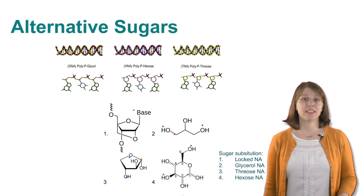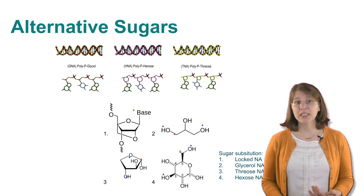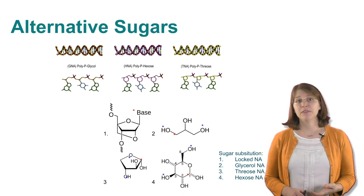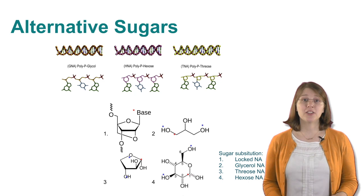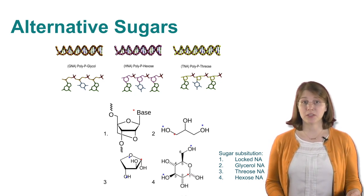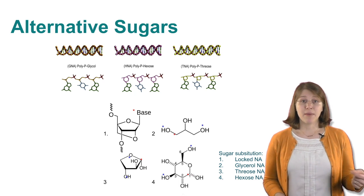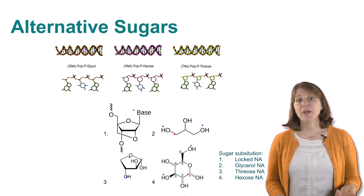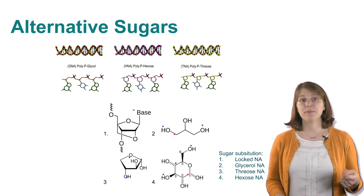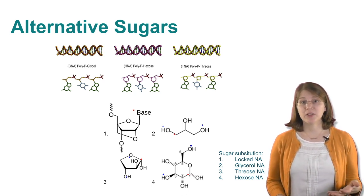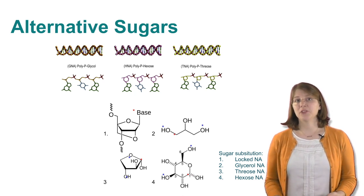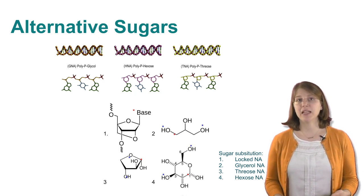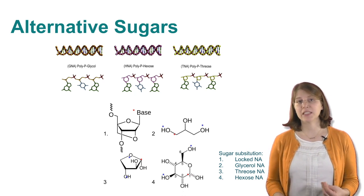We have tested alternative sugars for their ability to support double helices and form Watson-Crick base pairs. You can replace ribose with a large number of other sugars — including ribose locked into a fixed conformation, glycerol as a backbone unit, smaller sugars like threoses, or larger hexoses — and these will also support DNA formation. So it's possible that other sugars could have been present and were then later evolutionarily selected away from.